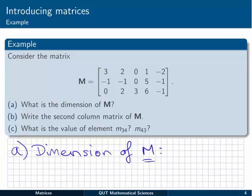OK, the dimension of M, remember that dimension refers to the number of rows by the number of columns. We can see that M has 1, 2, 3 rows, and 1, 2, 3, 4, 5 columns. So the dimension of M is 3 by 5.